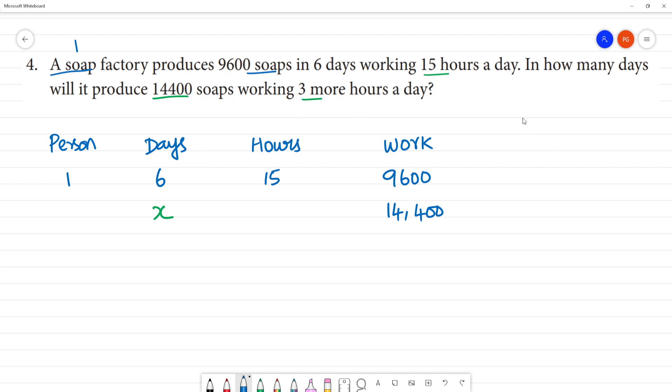This is 15 hours to work. 3 more hours to work in the factory. If you look at total, it is 18 hours. 3 more hours means 15 plus 3. This is 18 hours. Clear? Now the person is the same.